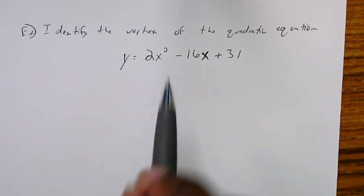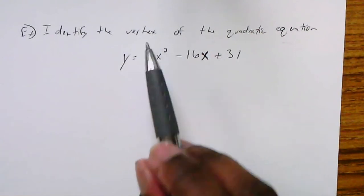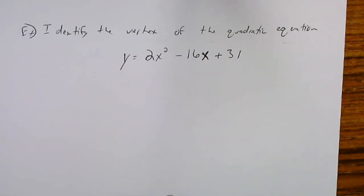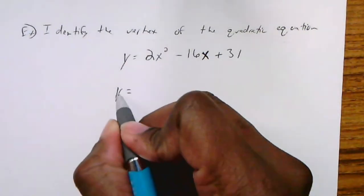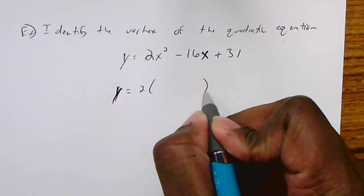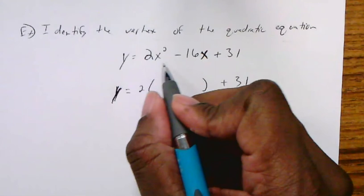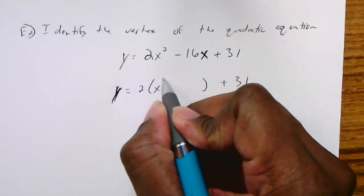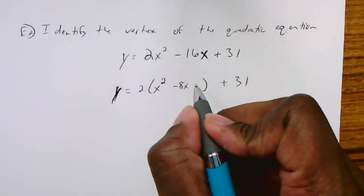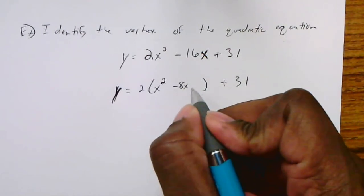The directions on this next one are slightly different — it says identify the vertex of the quadratic equation. So we need to put it in vertex form and then state the vertex. The first thing we do is factor out the a value. Here a equals 2, so put 2 out in front of the parentheses, keep just the variable terms inside, and add the constant 31 to the end. After factoring out 2 the expression inside becomes x squared minus 8x.